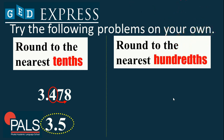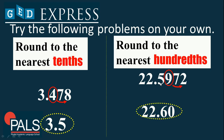How about the next example? Round to the nearest hundredths: 22.5970. We circle the number in the hundredths place, which is 9, and the number after it is 7 — greater than 5. So we add 1 to 9. But 9 plus 1 equals 10, so we write 0 and carry the 1 to the next place. The answer becomes 22.60.